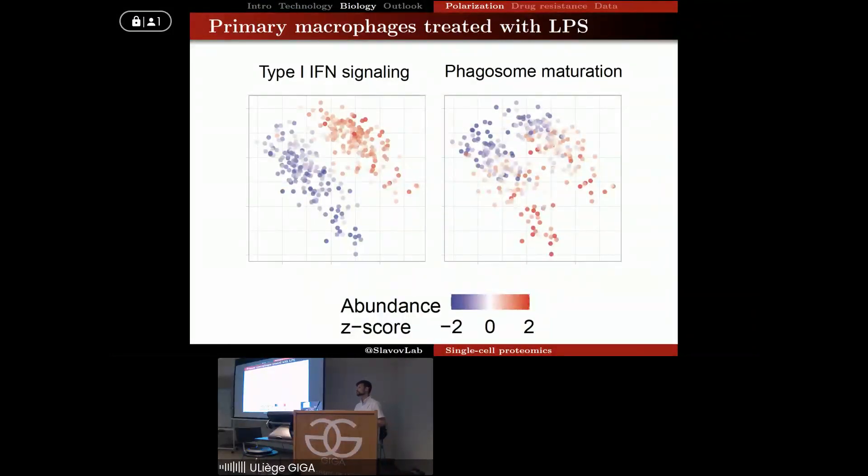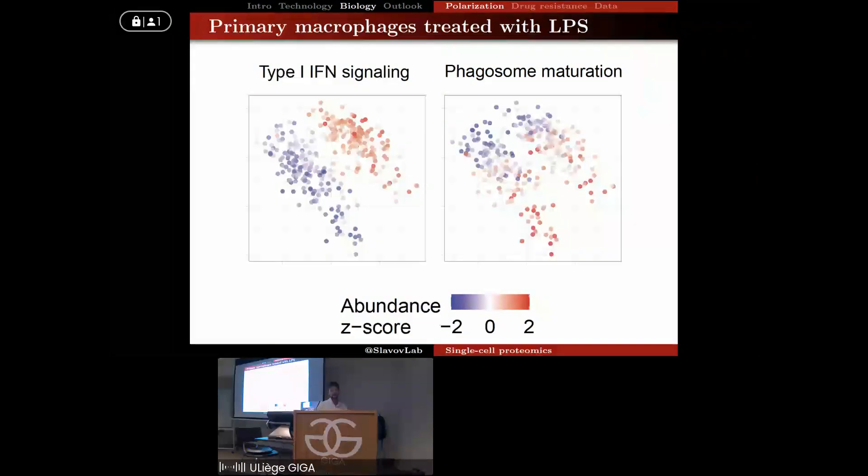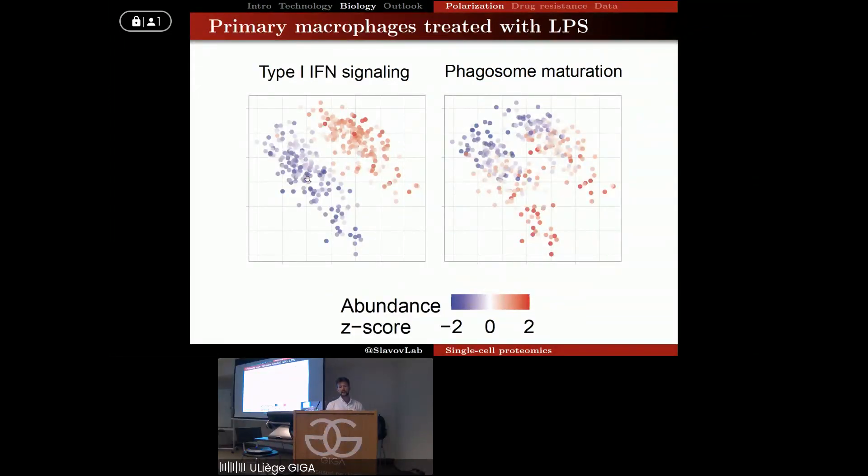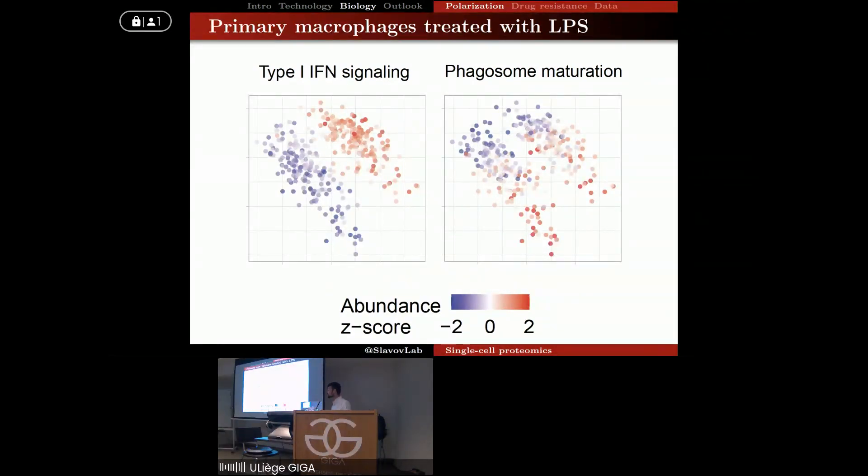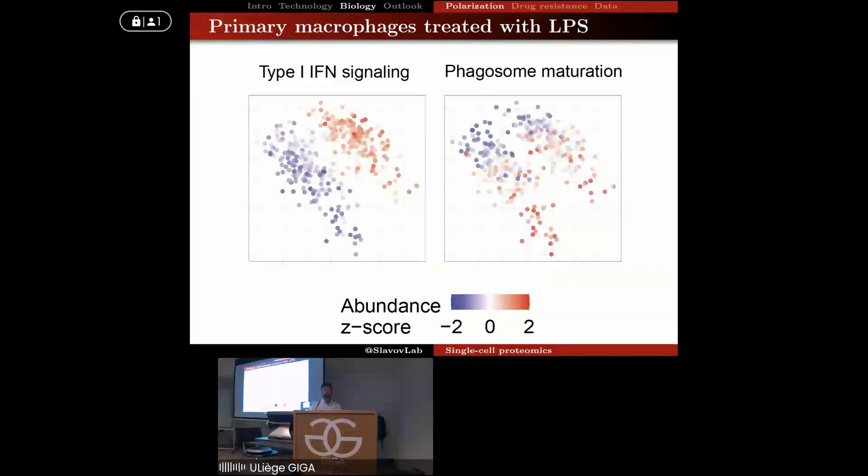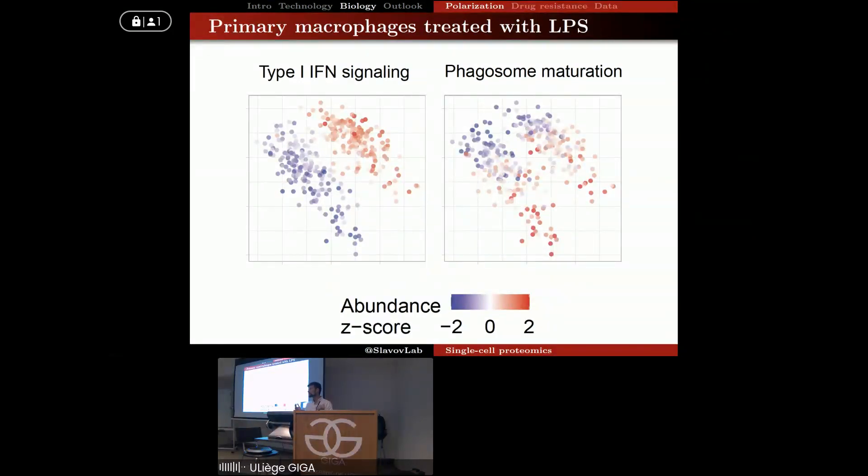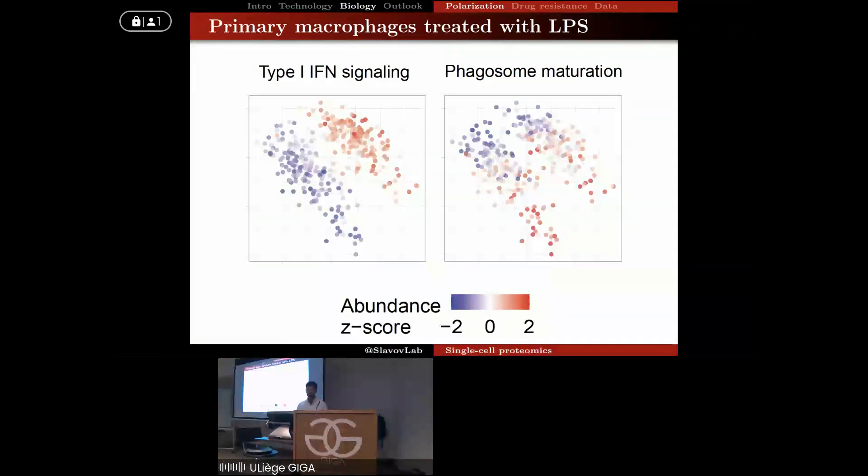Now let's look at some functional sets of proteins. What's their abundance? If we look at type 1 interferon signaling, we see that it's uniformly low in the untreated cells, more or less uniformly high in the treated cells. That's expected. We treated the cells with an inflammatory agent. They uniformly have more interferon signaling. We didn't need to do single-cell measurement for that. That's a very expected outcome.